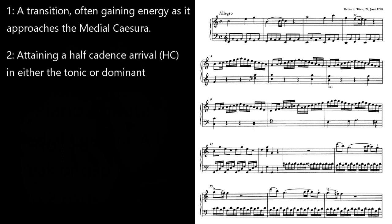Second, attaining a structural dominant by means of a half-cadence arrival. This will typically be in either the tonic, and marked 1-HC-MC, meaning a half-cadence in the tonic key, or a 5-HC-MC, meaning that the transition has modulated to the new key of the dominant, or median if we're in a minor mode sonata, and is presenting a half-cadence in the new key. K545's transition does not modulate, so we have the first option here, a 1-HC-MC.